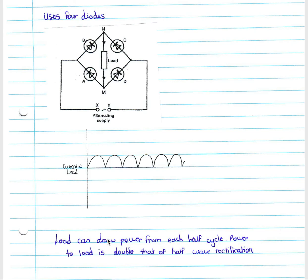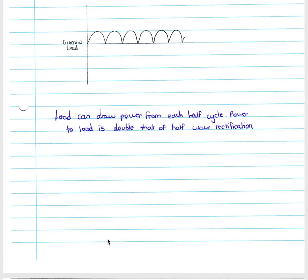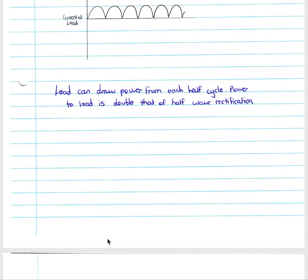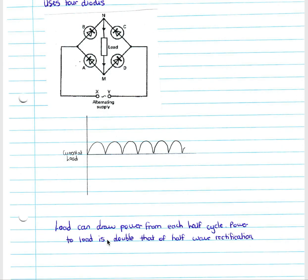The load can draw power from each half cycle, and power to the load is double that of half wave rectification — so it's much more efficient. This is what we mainly use in any application where we need to rectify our power. You will need to know how to explain that full wave rectification is done with four diodes, and they will often ask you to explain the movement of current through the diodes and explain how it works.